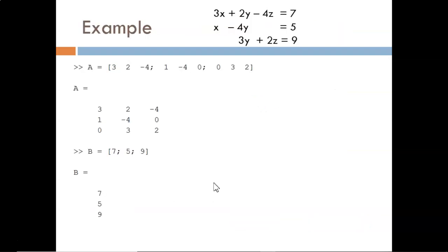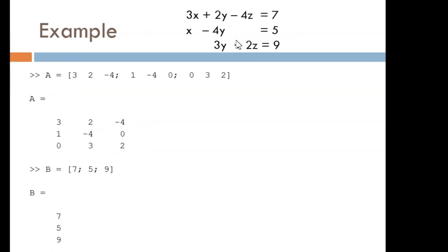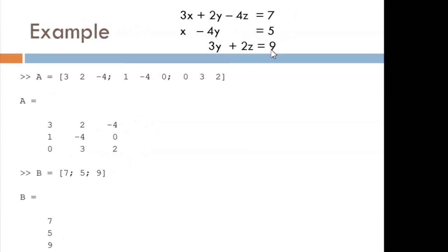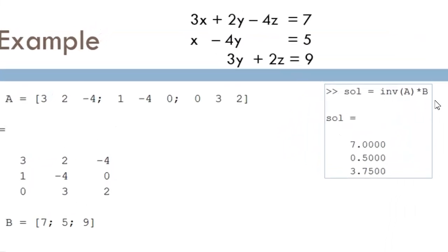Let's look at both methods used to solve this three-term system. First, I manually define matrix A and vector B. Don't forget to include zeros as coefficients for variables that are missing. Then, we solve with inverse of A times B. This tells us that X equals 7, Y equals 0.5, and Z equals 3.75.